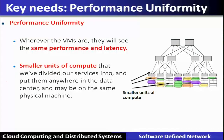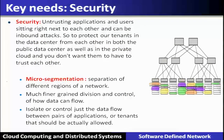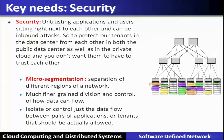Smaller units of compute can be divided into services and placed anywhere in the data center, possibly on the same physical machine. The third requirement is security — untrusted applications and users sitting next to each other can face inbound attacks. To protect different tenants in the data center from each other, security must be enforced. Techniques such as micro-segmentation, separation of different regions of the network, and finer-grain division and control of data flow are used to isolate control between pairs of applications or tenants.